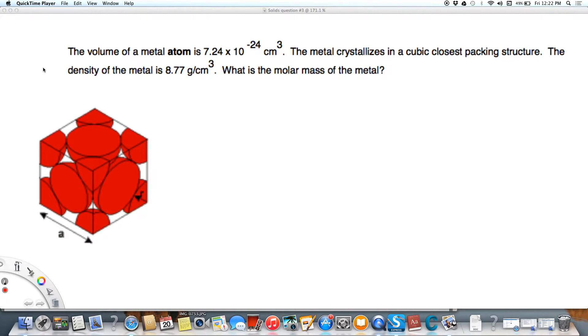Alright, in this question we're given the volume of an atom, which is just going to be one sphere, and it's a metal and it crystallizes into cubic closest packing, so we need to remember that's a face-centered cube, and we're given the density is 8.77 grams per centimeter cubed. What's the molar mass of the metal? A couple other things that we know, because it's face-centered cubed, we know that there are four atoms in one unit cell, so that's going to be helpful to us.